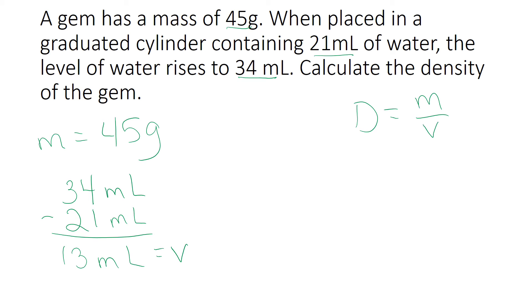So now all I have to do is plug in my mass and volume for density. So density equals 45 grams divided by 13 milliliters. And so my answer will now be in grams per milliliter, which is perfect because that's the units for density.